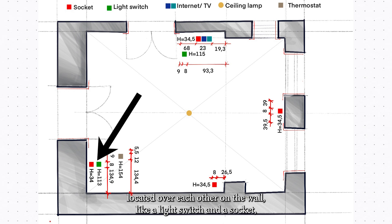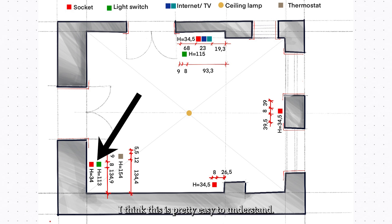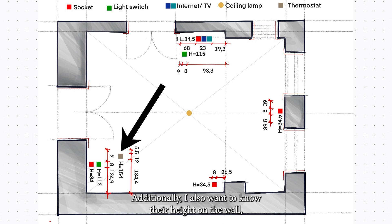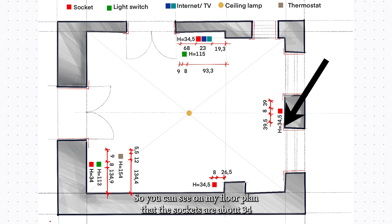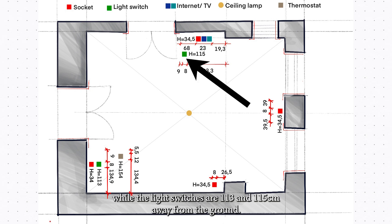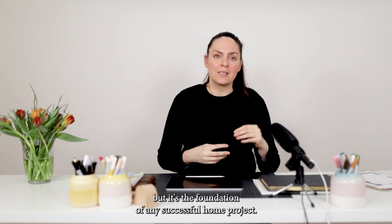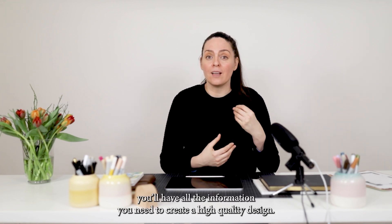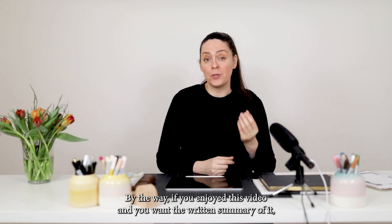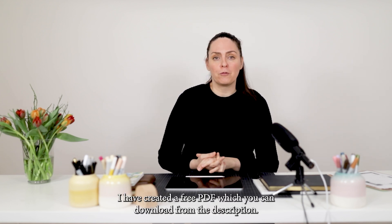Electrical elements located over each other on the wall — like a light switch and a socket — I have placed in a line perpendicular to the wall they are located on. I also measured the upper edge of each electrical element and wrote down the distance between that upper edge and the ground. The sockets are about 34 to 34.5 cm away from the ground, while the light switches are 113 and 115 cm from the ground. Taking precise measurements might seem tedious, but it's the foundation of any successful home project. By following these steps you'll have all the information you need to create a high quality design. If you enjoyed this video and want a written summary, I have created a free PDF you can download.